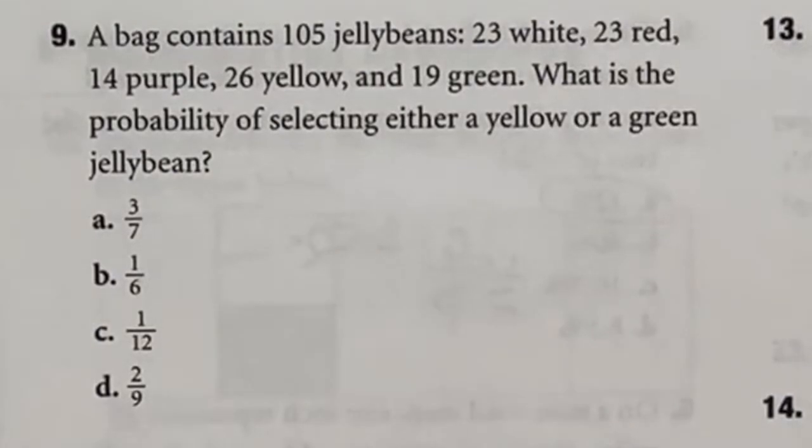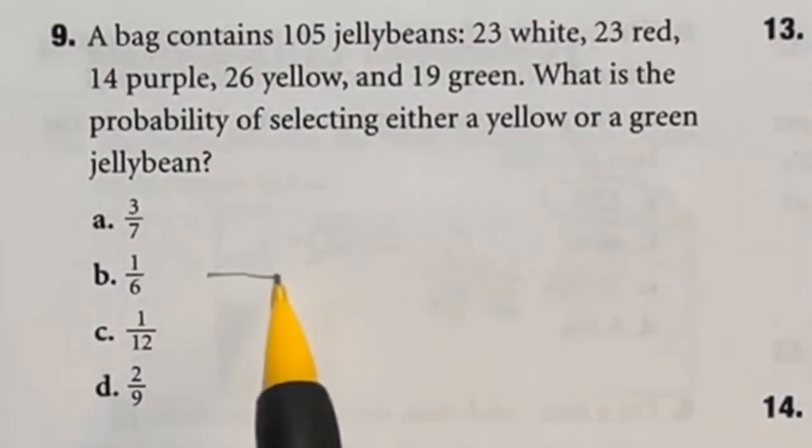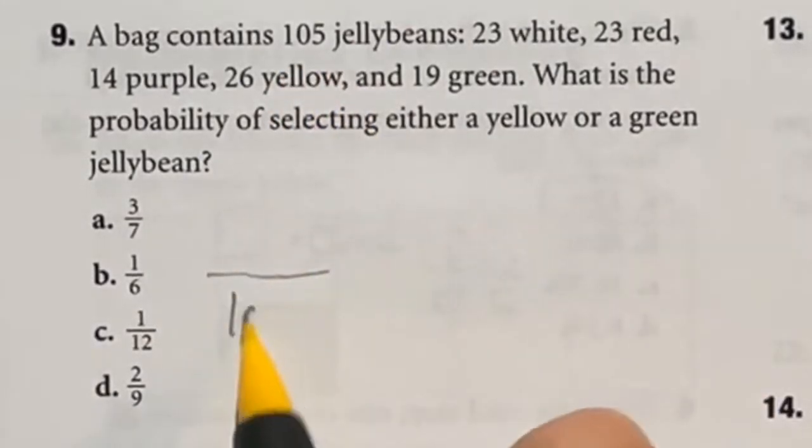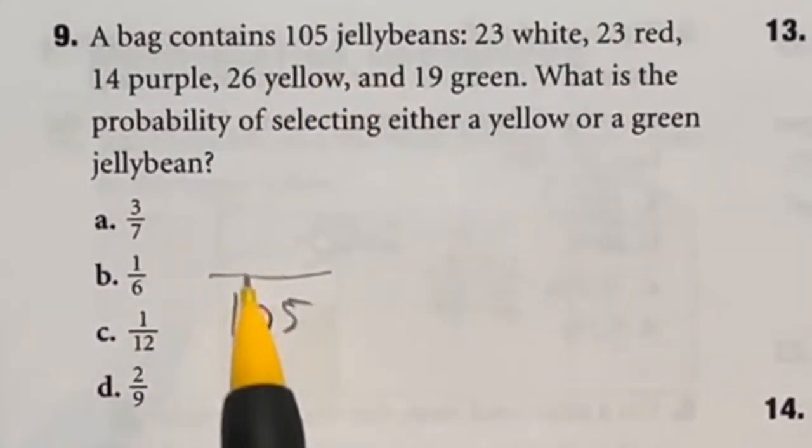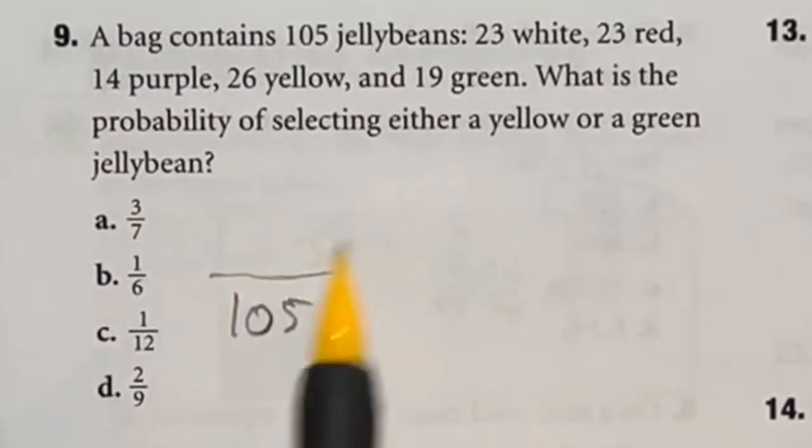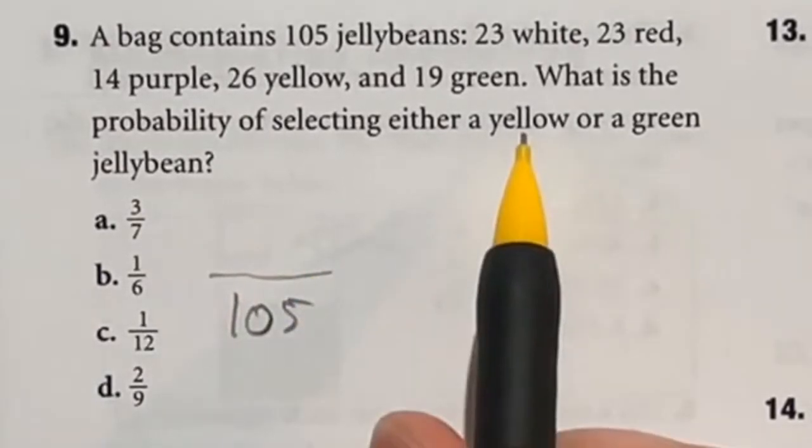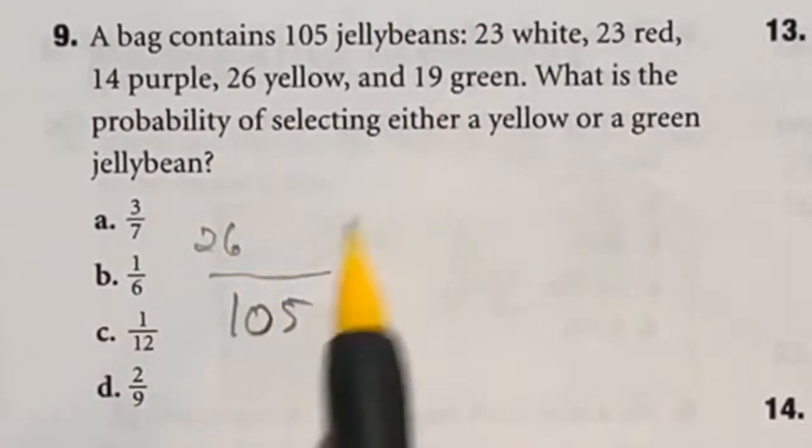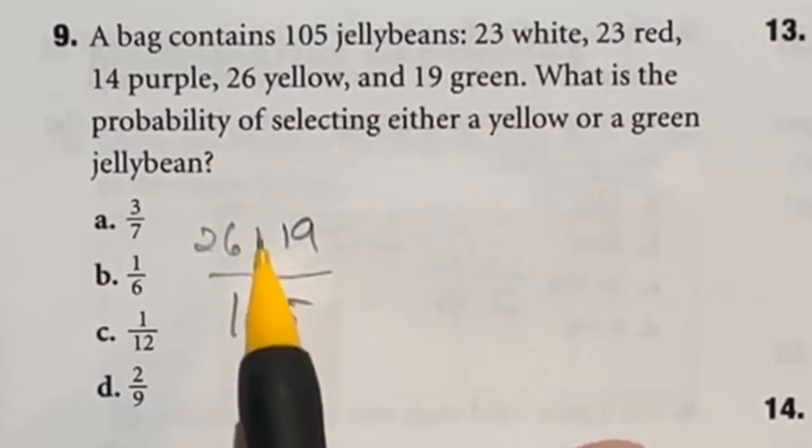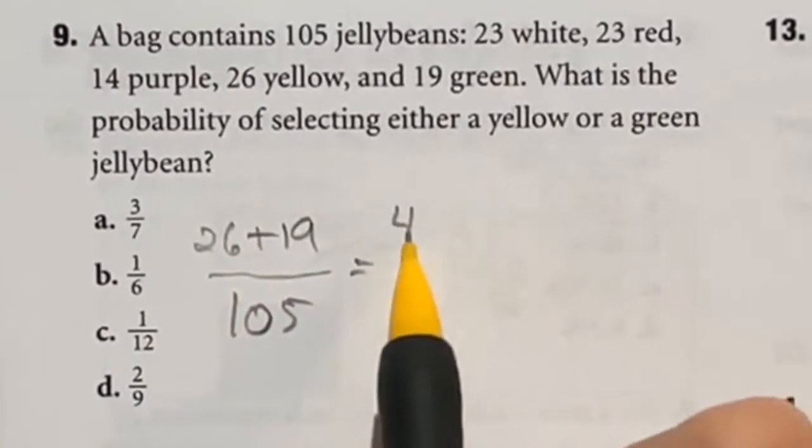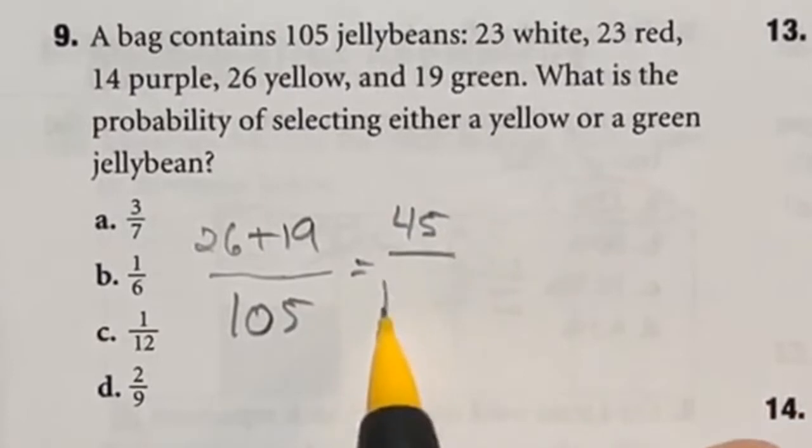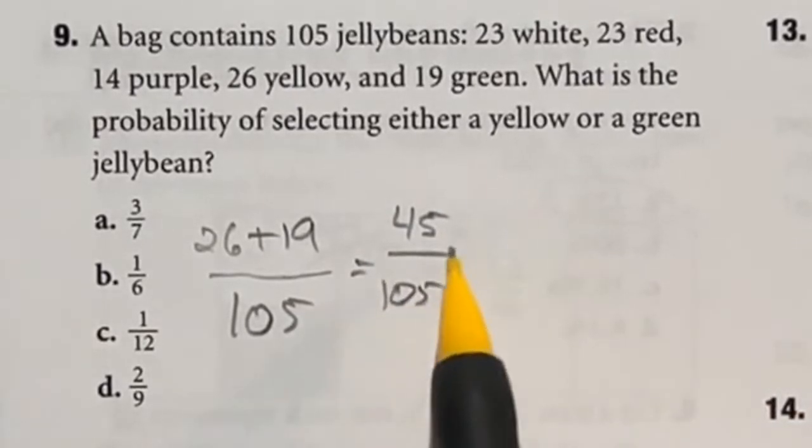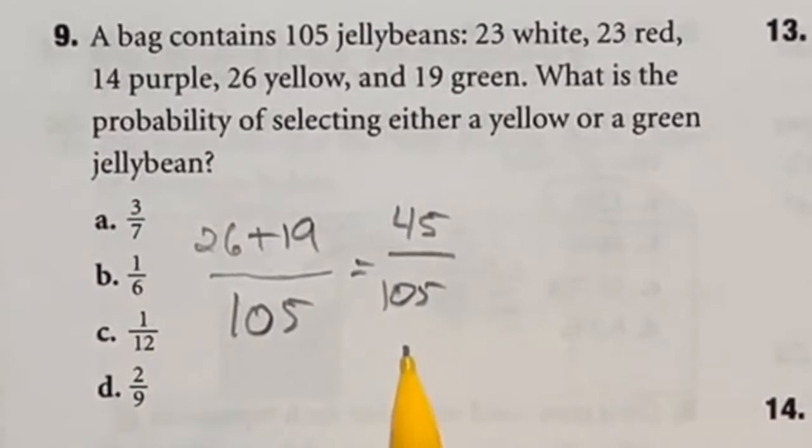So basic probability states that you take your total number of whatever outcomes you have, and you put that number on the bottom. In this case, we have 105 jelly beans, so I put that on the bottom. And then on the top, you put the number of whatever the thing is that you're looking for. In this case, it's yellow or green. So yellow, there would be 26 of those, and green, there would be 19. So I'm just going to go ahead and add those together. That's going to end up giving me 45 over 105. Now, it may be difficult to realize that this is not one of your answers over here, but it's because we need to reduce.